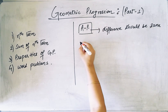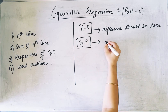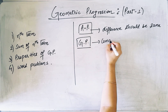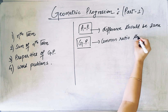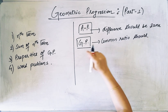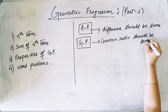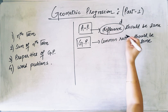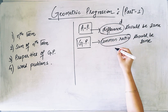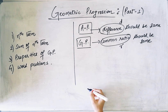Now what is geometric progression? In short we can write GP, and in GP the common ratio should be same. In AP the difference was denoted by D, and here the common ratio is denoted by R.